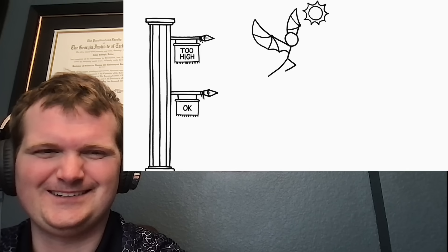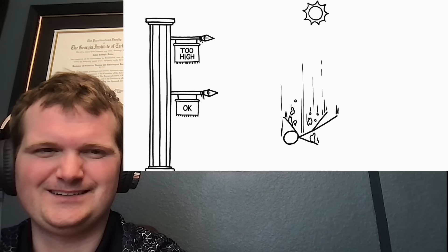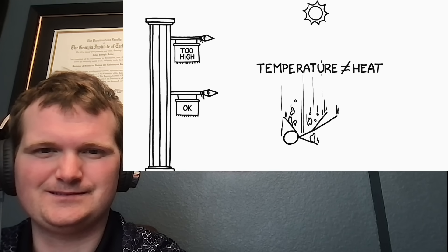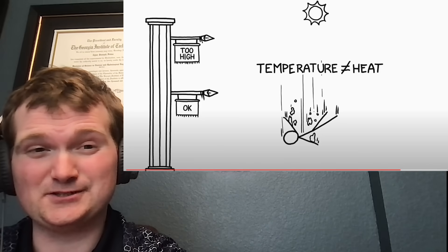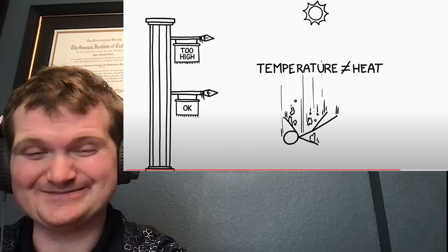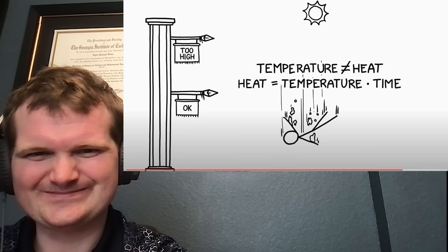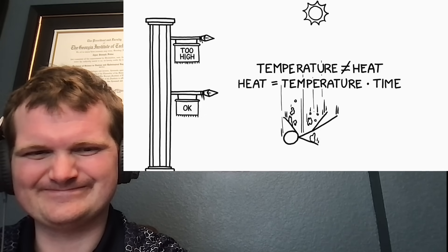In Greek legend, Icarus flew too close to the sun, and the heat melted his wings and he fell to his death. It's true that the temperature is higher, closer to the sun, but temperature and heat aren't the same thing. Melting, or any phase change of substance requires the absorption of a specific amount of heat energy per kilogram. And the heat absorbed is a function of both the temperature and the length of time you're exposed to it.